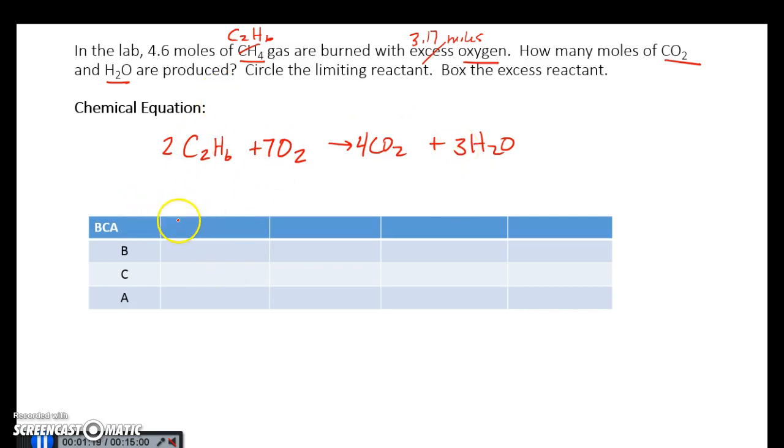Once I have that determined, I place my chemicals into the BCA table and including those coefficients. All right. So the next step is identifying what I have. So I am told that I have 4.6 moles of C2H6 and I have 3.17 moles of H2O.